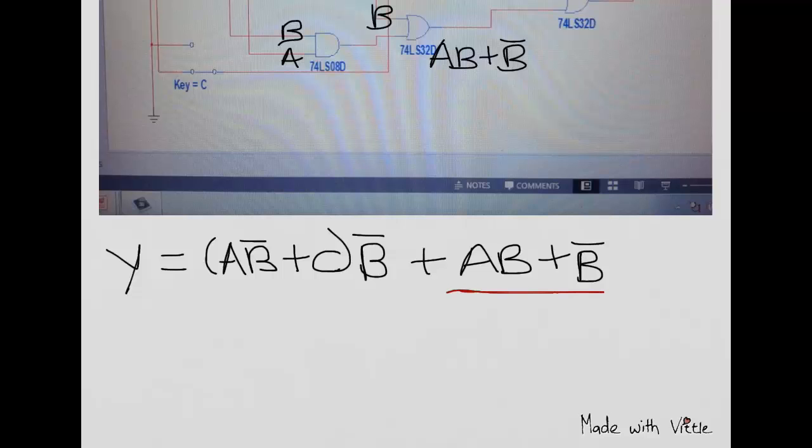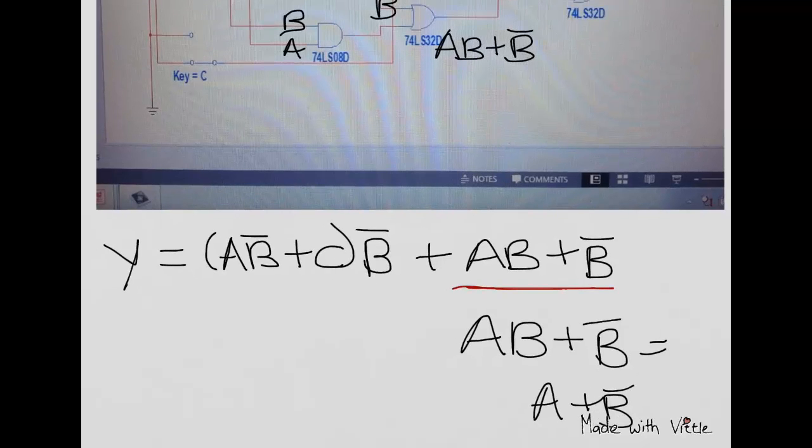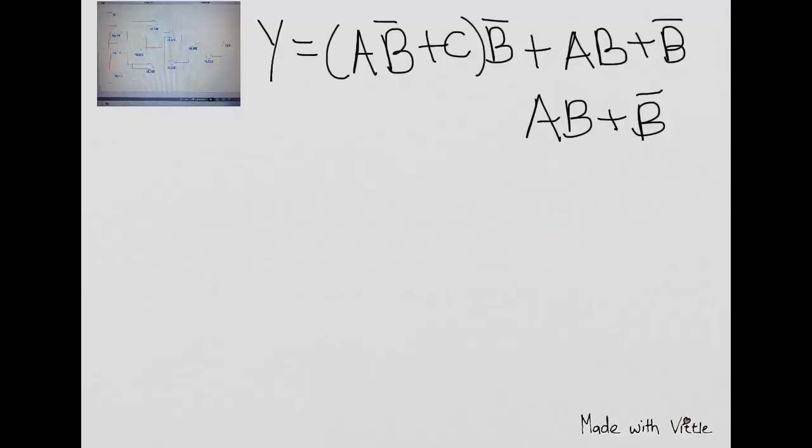you may notice that you have a consensus term there. So if you want to do that one, we have the rule A, B, or not B is equal to A or not B, and that's one of your consensus theorems. So if we have A and B or not B, we would use a consensus theorem to say that is A or not B.